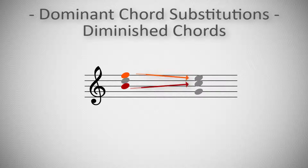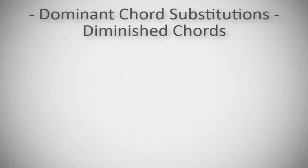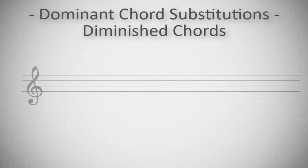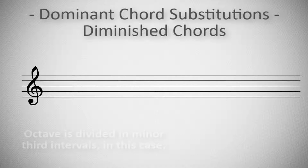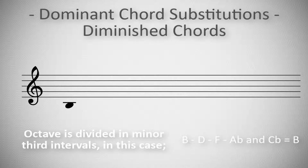The structure of a fully diminished chord is symmetrically built in minor thirds, which can be used to divide an octave in four equal parts: B, D, F and Ab, and then returning to B.